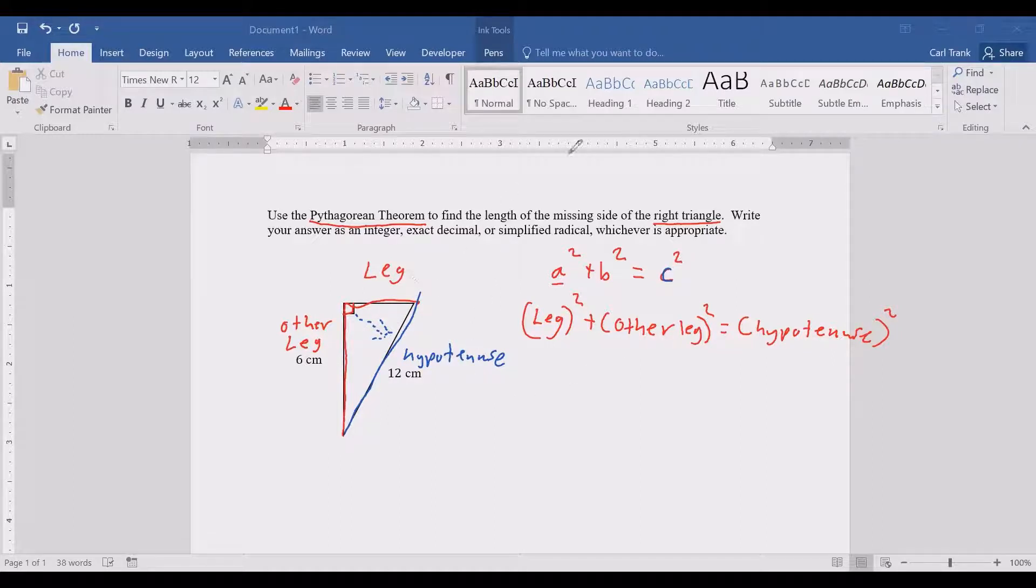So for this first example, let's use the Pythagorean Theorem. We have leg squared. Well, let's just call this first leg A that we don't know. So we have A squared plus what is your other leg?